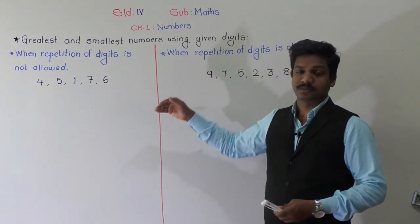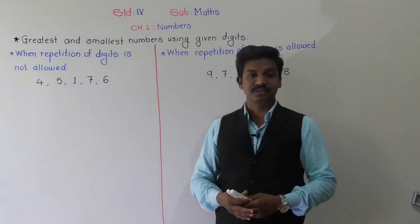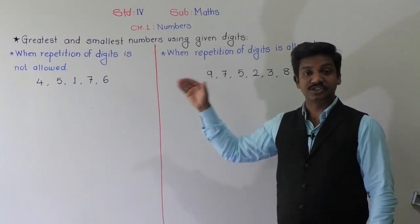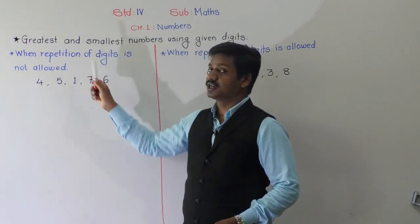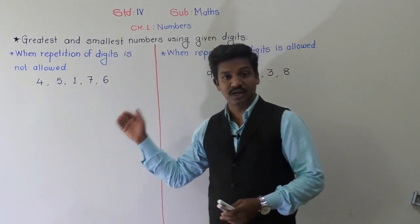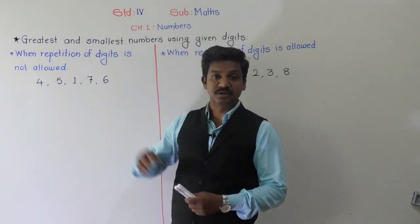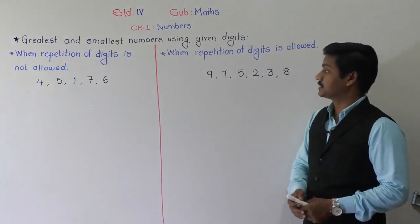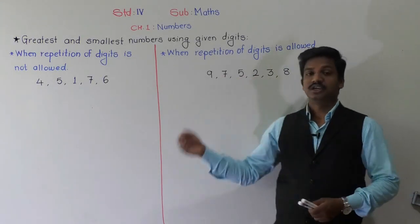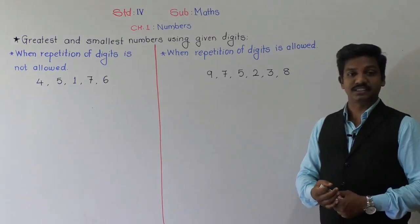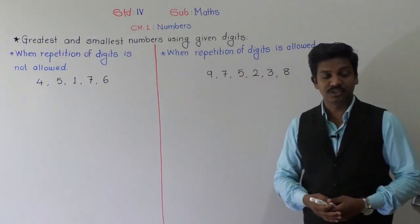When we have to form the greatest or smallest five- or six-digit numbers, there are two conditions. The first condition is when repetition of a digit is not allowed. The second condition is when repetition of a digit is allowed — meaning whatever digits are given, you can repeat a digit to form the greatest and smallest six-digit number. We are going to learn how to handle both cases today.